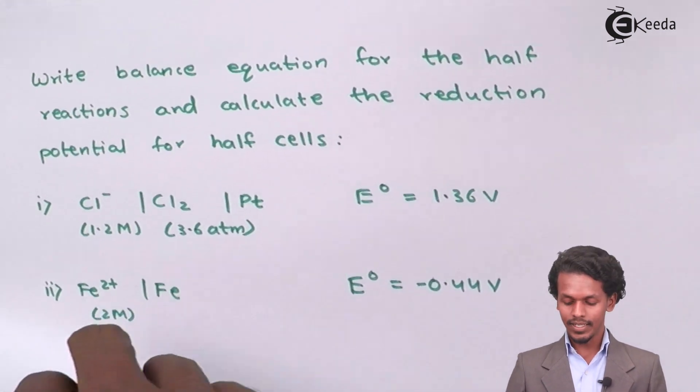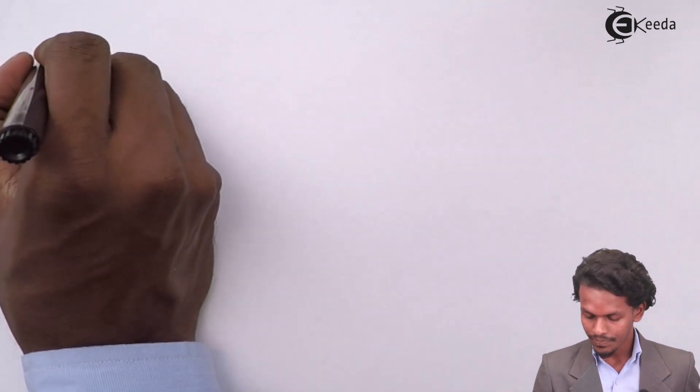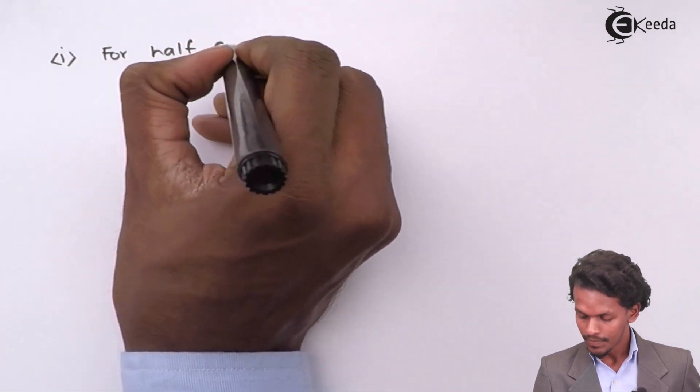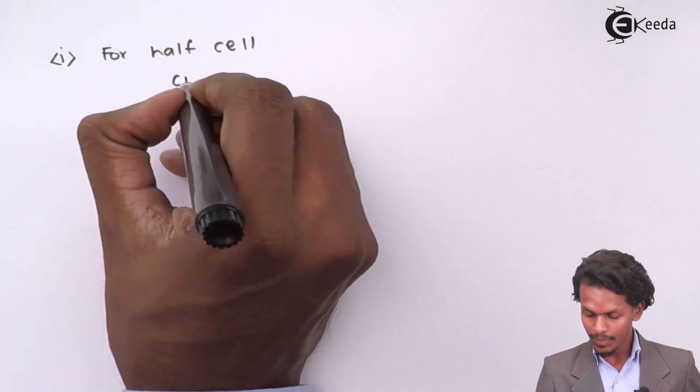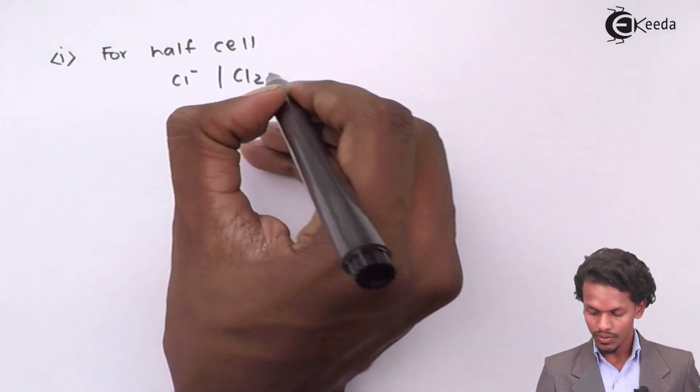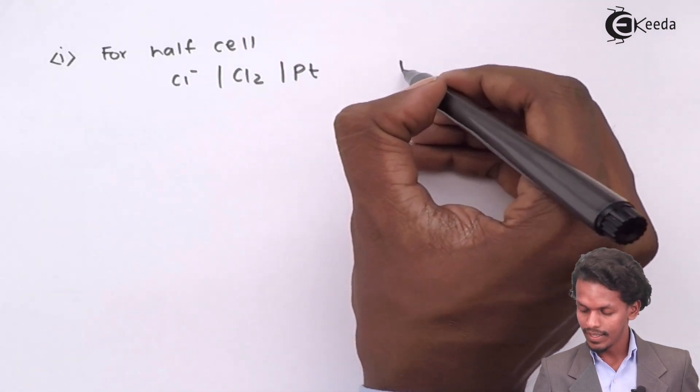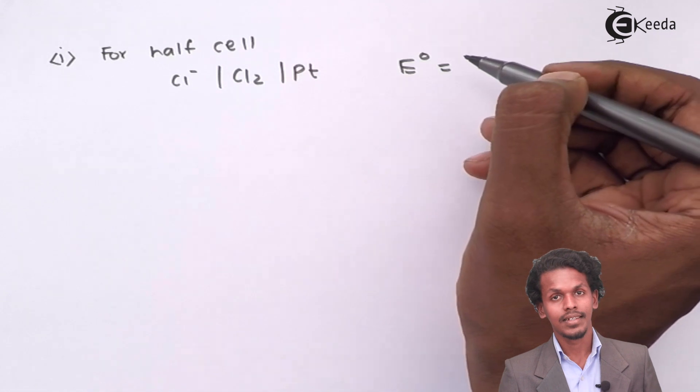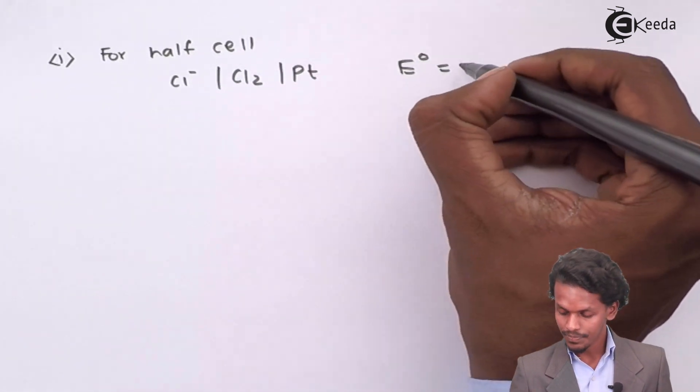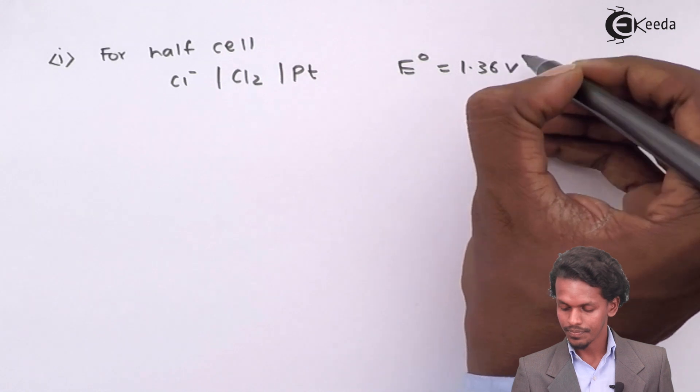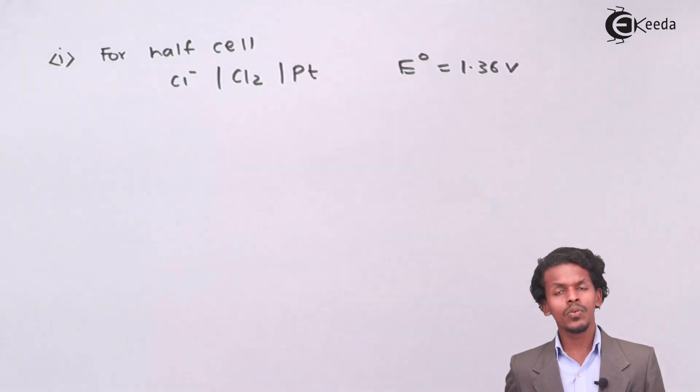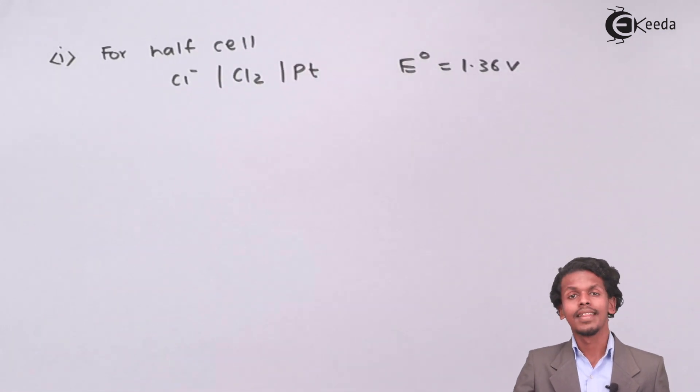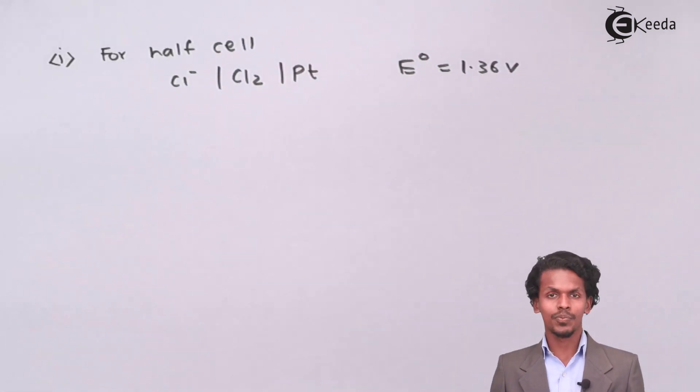First let us see for this one. We have to calculate the reduction potential for the half cell, Cl- giving us Cl2 and the E0 value is given as 1.36V. Since the values are given for reduction potential, it means that electrons are being accepted during this process.